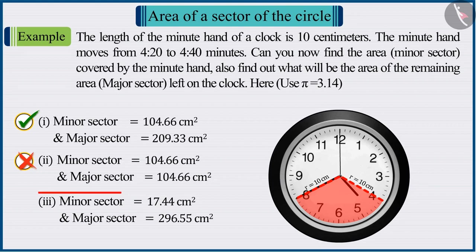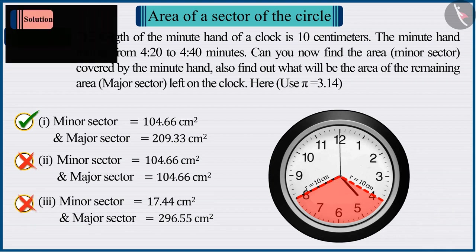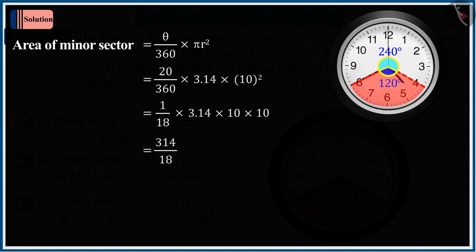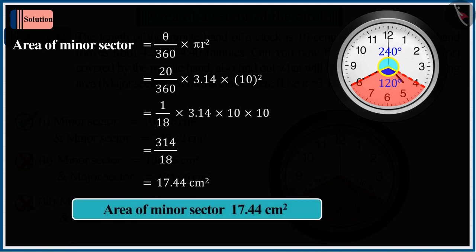If you have selected option 3, it is a good try, but this is also the wrong answer. Because, without finding the value of angle of the minor sector as 120 degrees, you put the value of angle as 20 degrees in the formula of the area of the sector and solved it further, which gives the incorrect value of the minor sector.